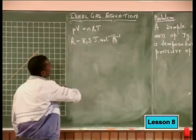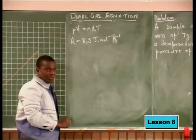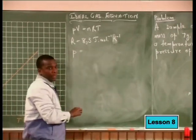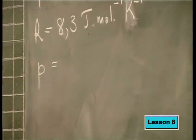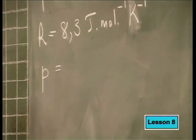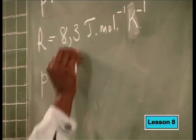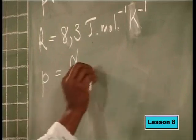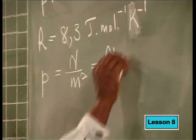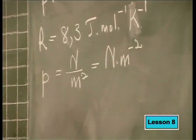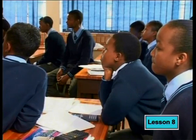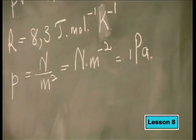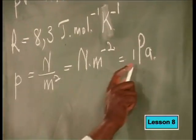The SI unit for pressure: from definition, pressure is force per unit area, which is Newtons divided by area in meters squared, giving us Newtons per meter squared. This is equal to a Pascal. So the SI unit for pressure is a Pascal.